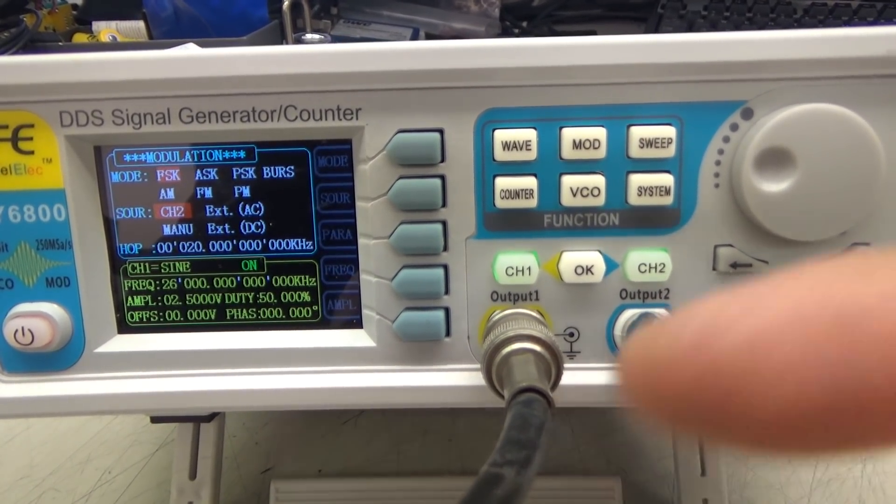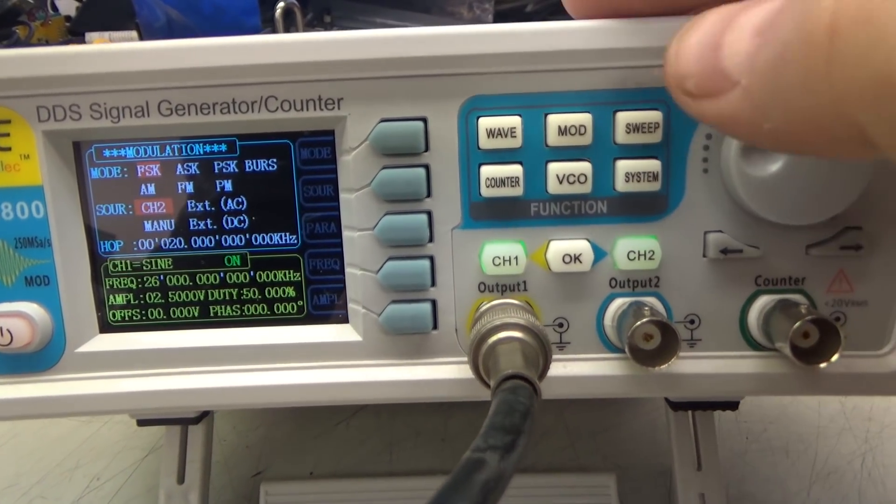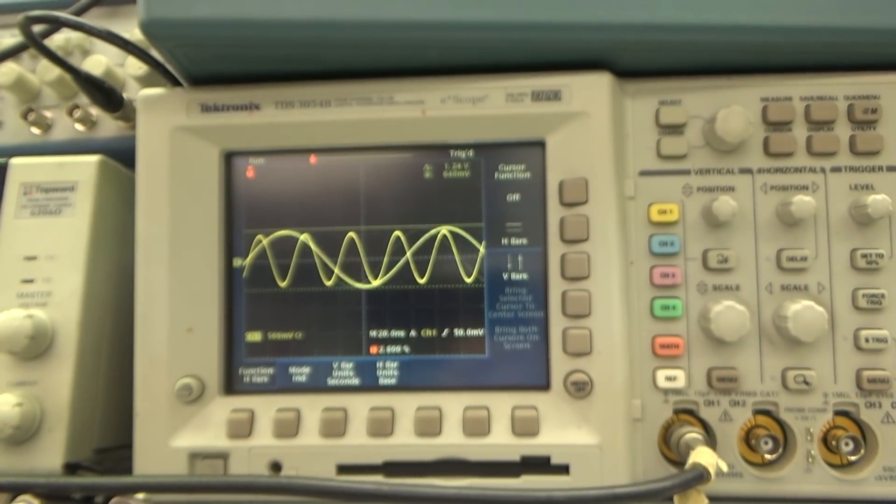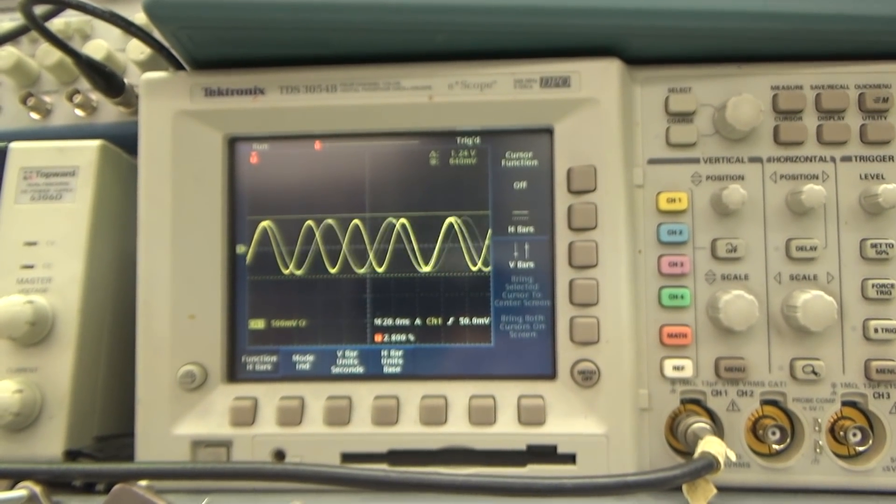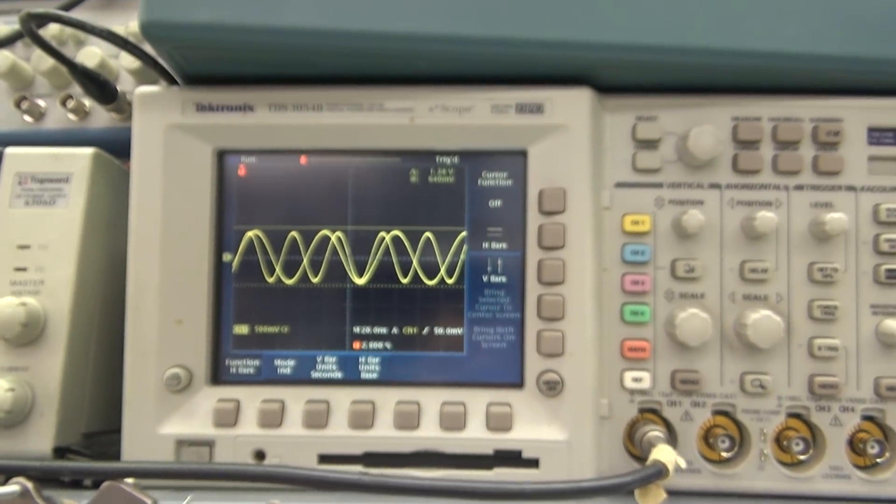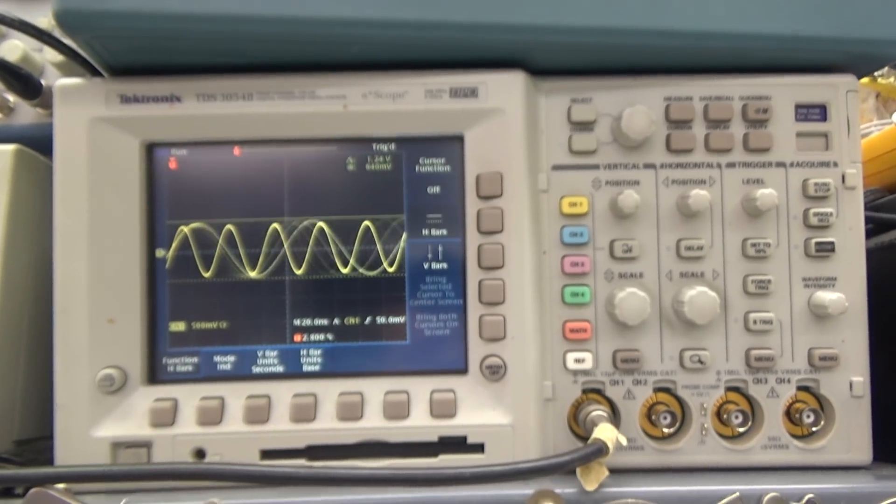So right now we are on channel 2 with FSK. So here I am adjusting the frequency, frequency shift keying. And since it is hopping back and forth the scope is triggering on it at different times. So you are actually seeing the signal overlaid.